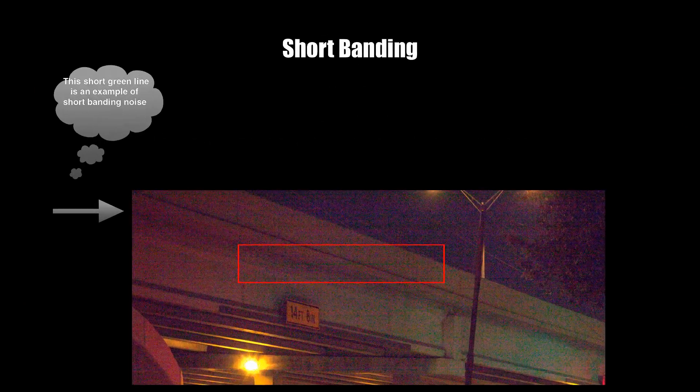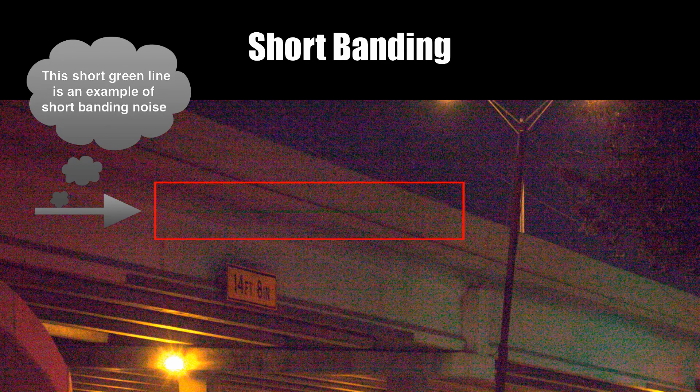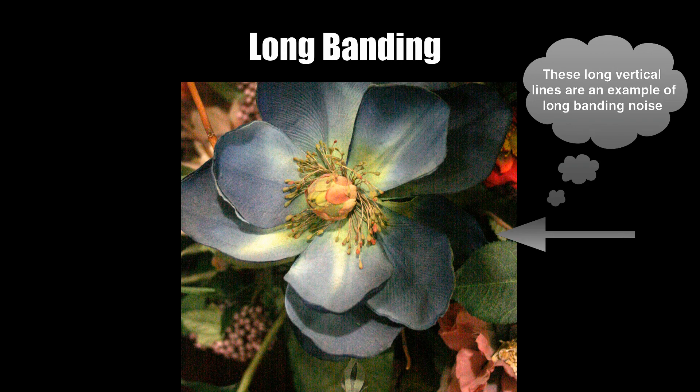Occasionally an image can suffer from both vertical and horizontal banding noise. There are two types of banding noise: short banding and long banding. Short banding appears in isolated areas of an image, but long banding extends across an entire image, either from side to side or from top to bottom, as seen here in this image.